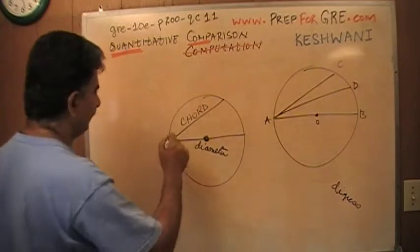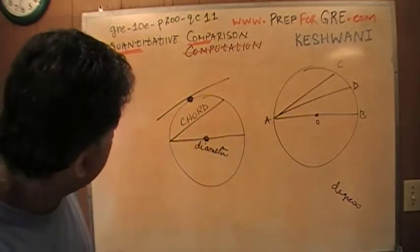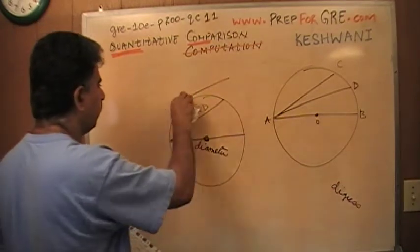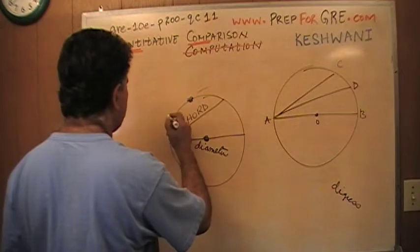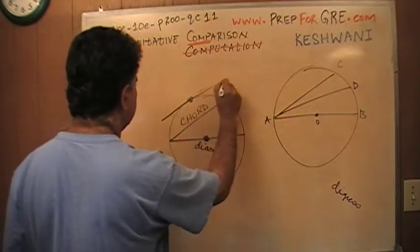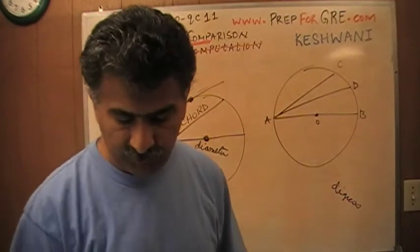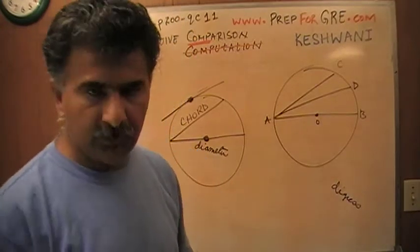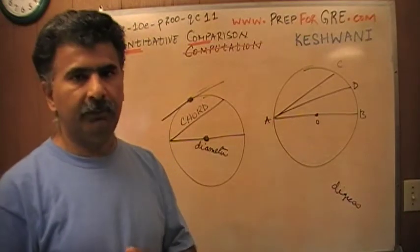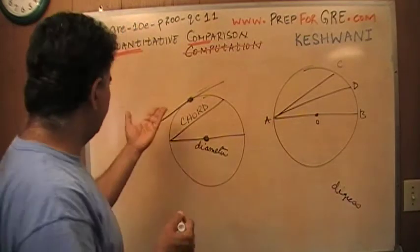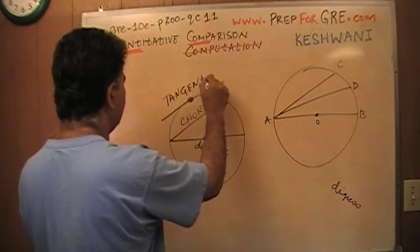What do you call a line such as this one? I drew it too far out. A line that touches a picture, any picture, doesn't have to be a circle, anything at all. A line that touches a picture just at one point, only one point. Does it have a name? Of course it does. It is called a tangent.